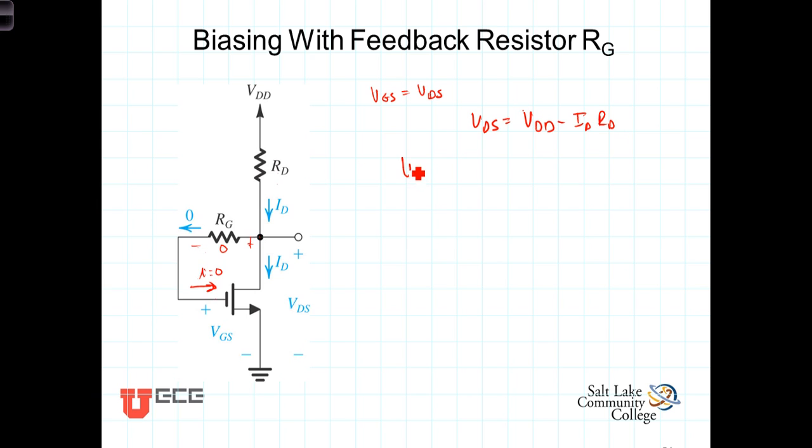And again, VGS is equal to that. So we have VGS equal to VDD minus I-sub-D times R-sub-D. As we had in the previous example of biasing, where we were setting the gate voltage using the voltage divider, we had the situation where the gate voltage and the drain current act in opposite directions.